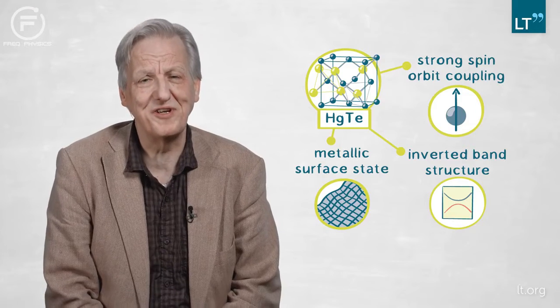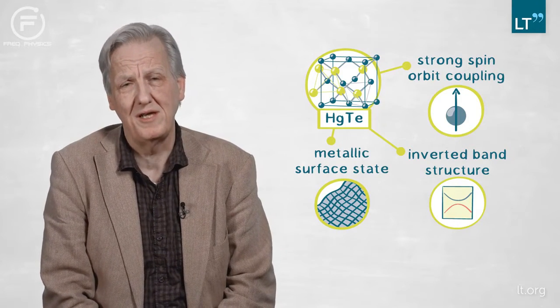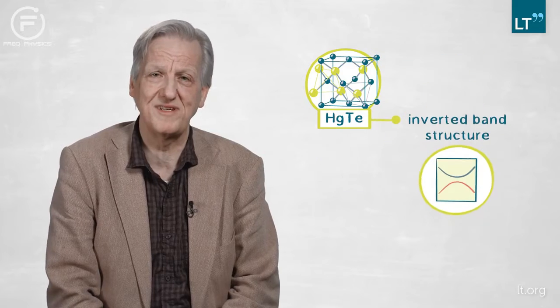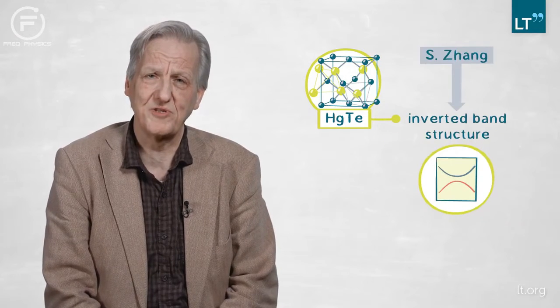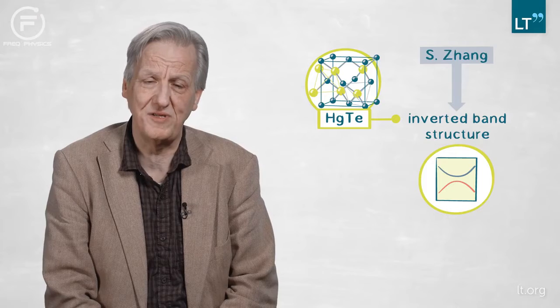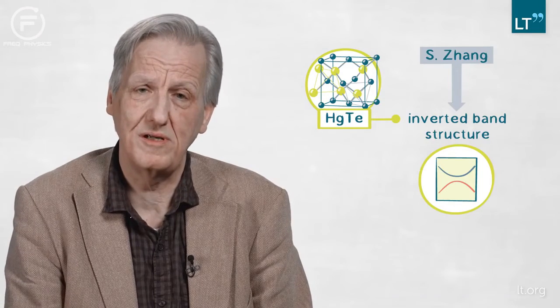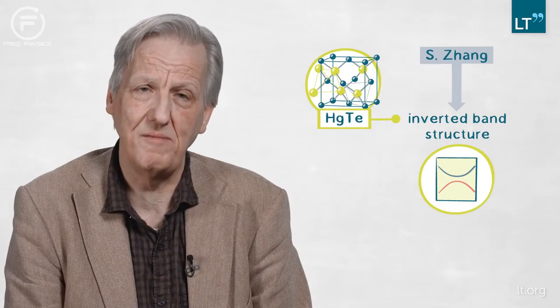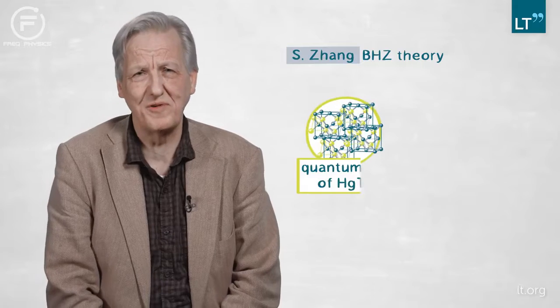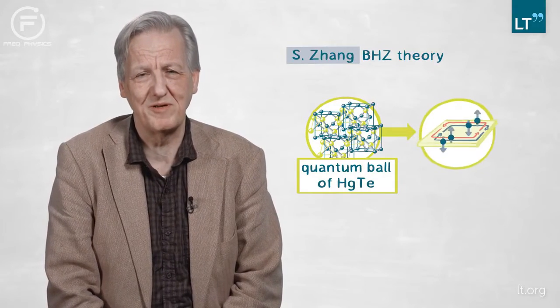I thought this might be related to the Kane and Mele proposal, so I discussed this band structure with Shou-Cheng Zhang, a theorist from Stanford, and gave him a PhD thesis describing our band structure calculations. Very soon he came back with a theory — now known as the BHZ theory — showing that if you make a quantum well of mercury telluride, you can expect to see the quantum spin-Hall effect.